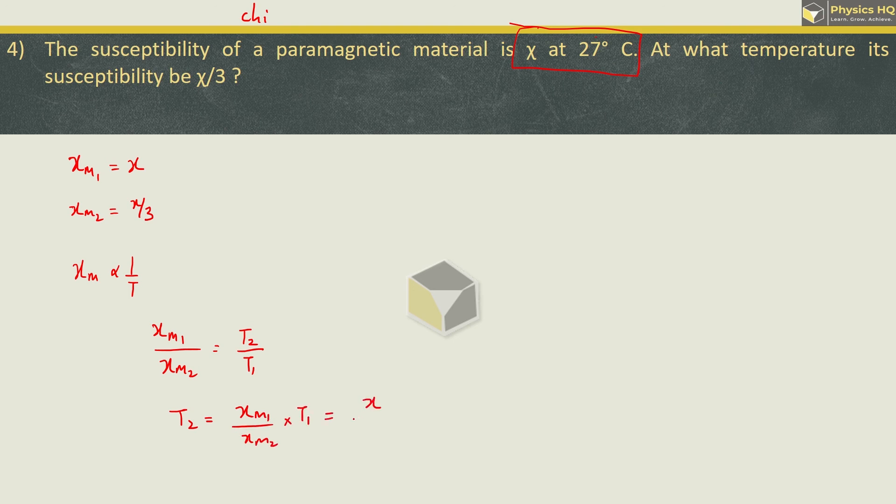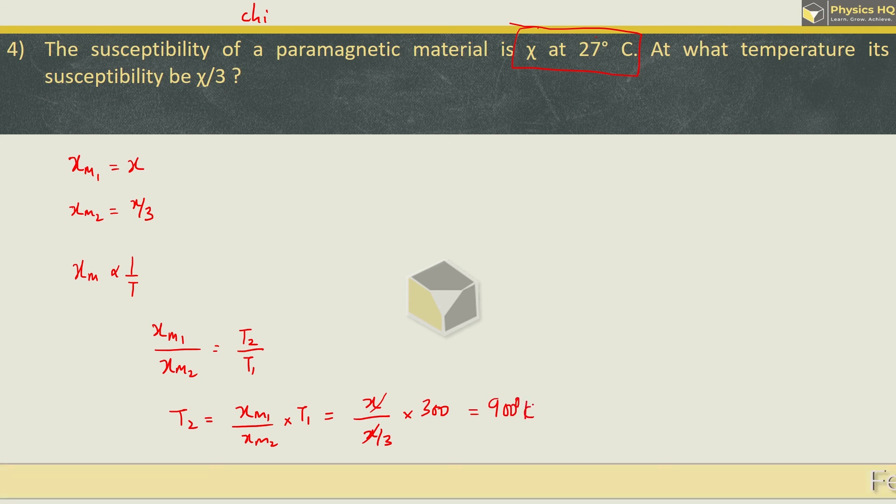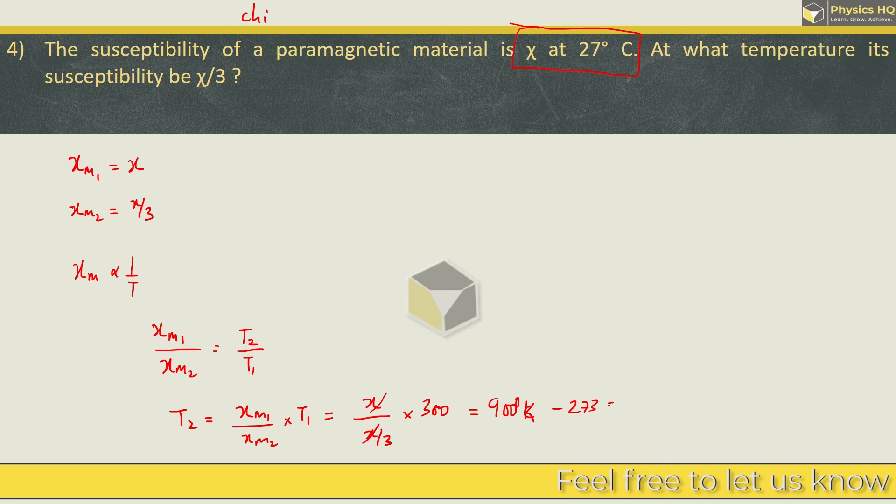So, T2 will become magnetic susceptibility initially upon finally into T1. Initially, the susceptibility was given by Chi. After that, it is 1 third. The temperature is 27 degree Celsius. In Kelvin, it will become 300. So, this will cancel. The final temperature is 900 degree Kelvin, which is 627 degree Celsius.